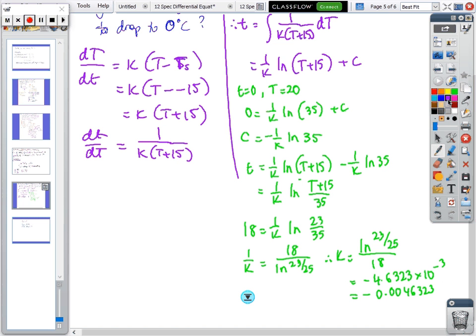Now to answer the question: how long does it take to get to 0? So the formula is t equals 1/(-0.0046323).